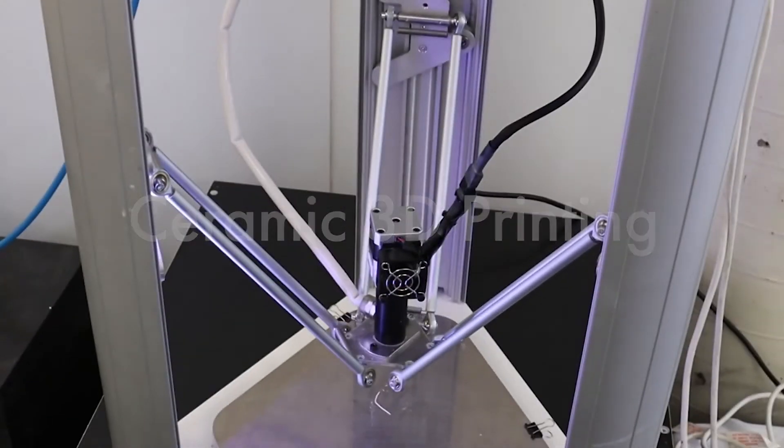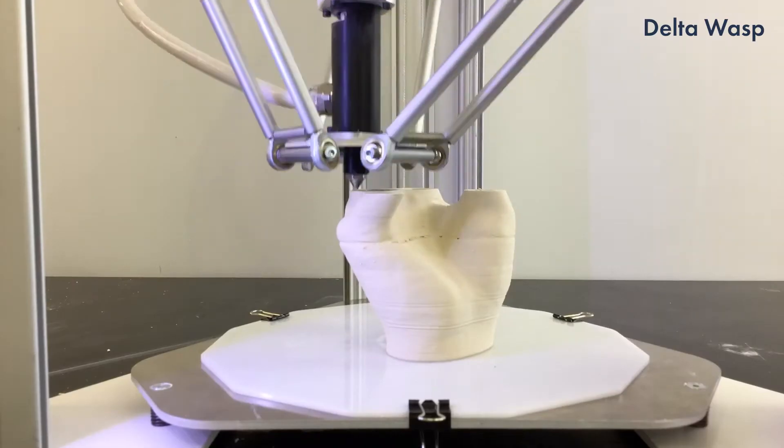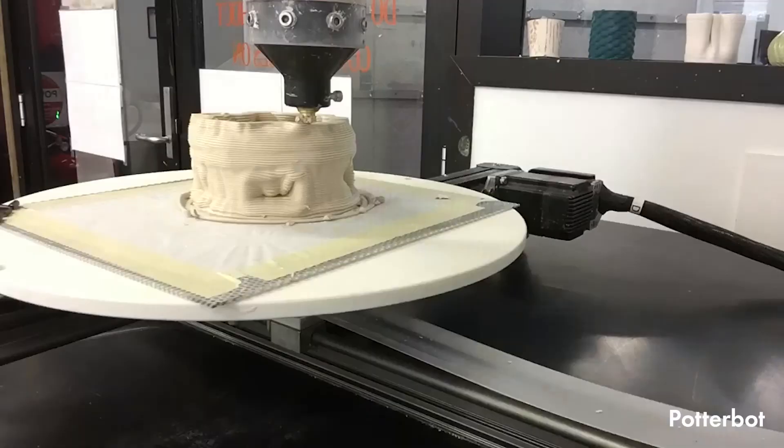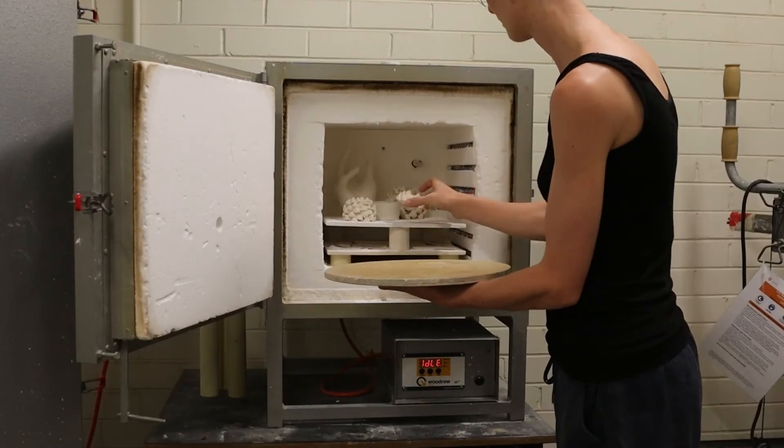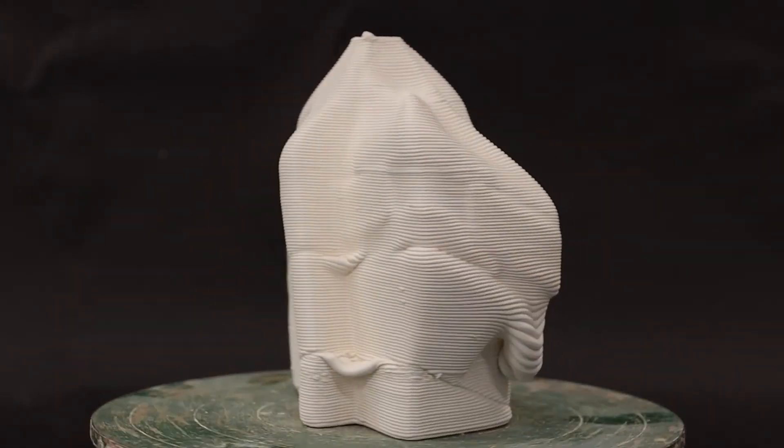Our Potterbot and Delta Wasp are able to extrude soft clay when 3D printing. The deposited clay needs to be dried and then fired before it becomes a hard ceramic object.